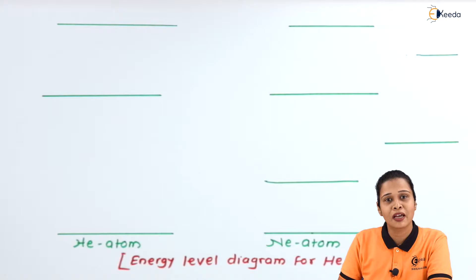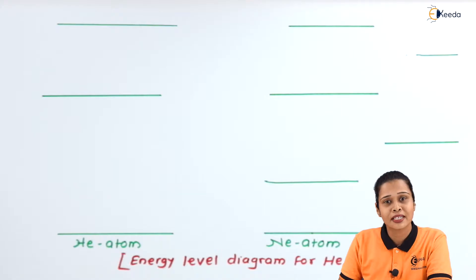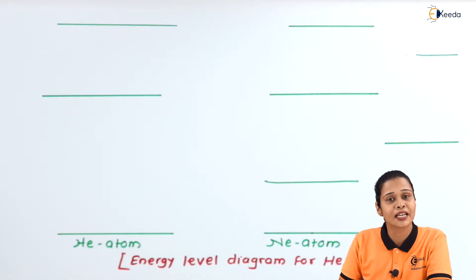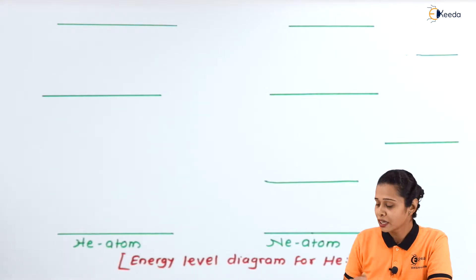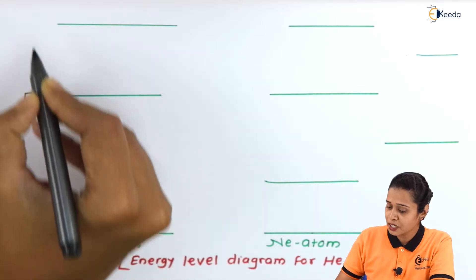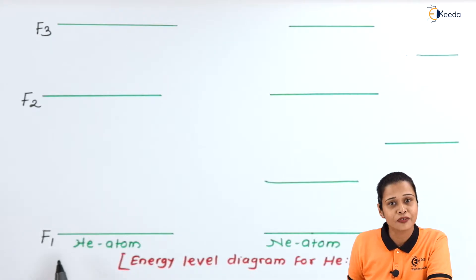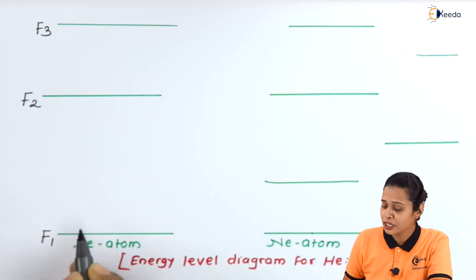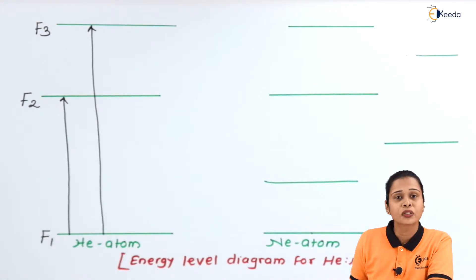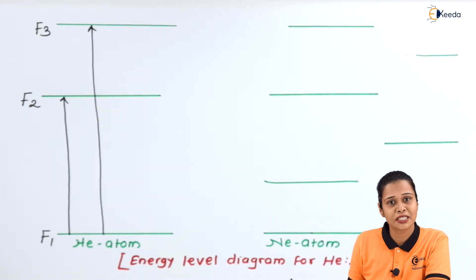Let us see the working and energy level diagram for the Helium Neon laser. When we switch on the power supply, electrons acquire energy and accelerate. These highly accelerated electrons collide on Neon and Helium gases. Since Neon is heavier and Helium is lighter, even if an electron collides with Neon there is no effect, but Helium acquires energy from the electrons and excites into the higher energy level. The metastable states for Helium are F2 and F3, and F1 is the ground state for the Helium atom. After acquiring energy, Helium jumps into the excited states F2 and F3.